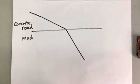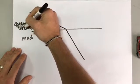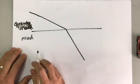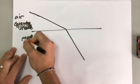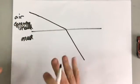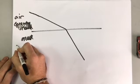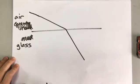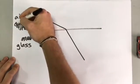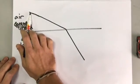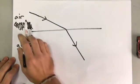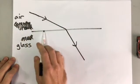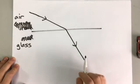Now the same basic thing happens with light. Instead of a concrete road, you have somewhere where light is able to go slightly faster, such as air. And here we have somewhere which is more dense, so it slows the light down — which is, let's say, glass. Then you have light travelling in this direction. Let's turn it into light by putting some arrows on it. You have light travelling this way, then it reaches the border between the two media.